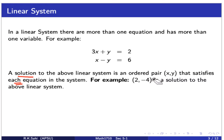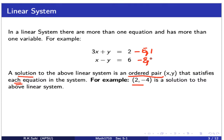Very important — it has to satisfy each equation in the system. For example, this linear system 3x plus y equals 2 and x minus y equals 6 has a solution: the ordered pair (2, -4). We are definitely going to check that. So let's go ahead and plug these into both equations. I always write equation 1 and equation 2 so I don't forget I have to substitute the ordered pair in both of them.